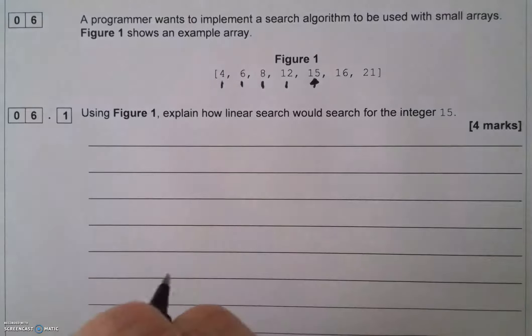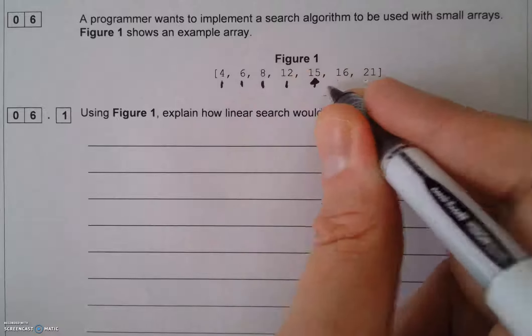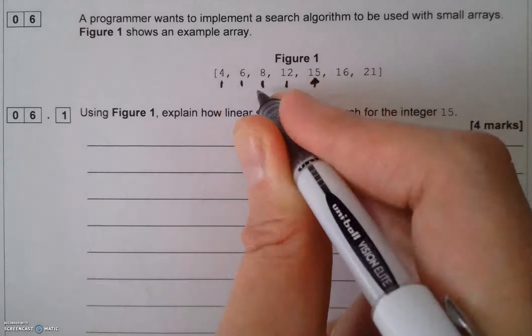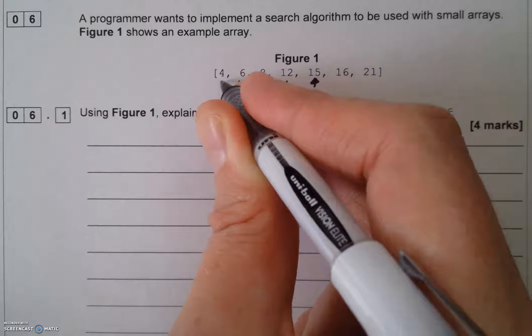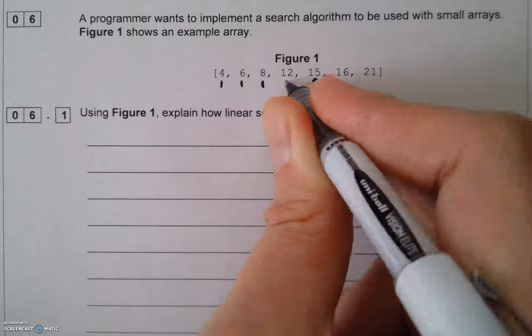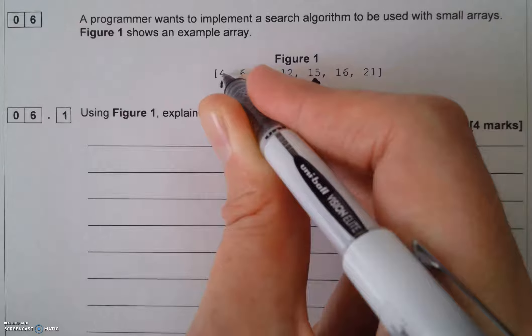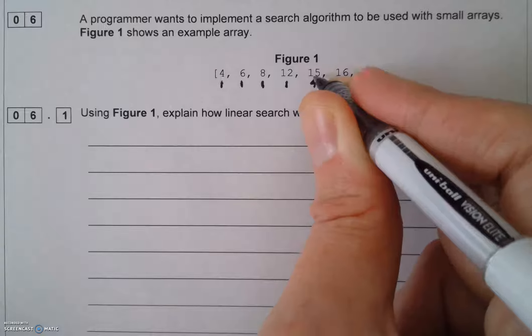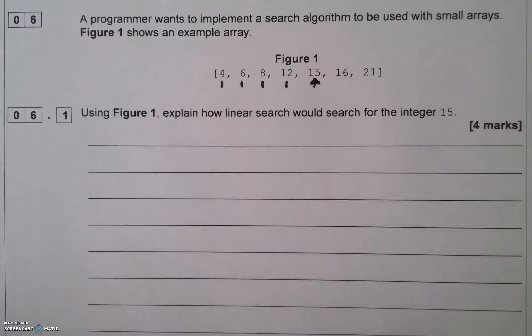Because it's a small list, the linear search is absolutely perfect for that, because all I'm going to do is look at each element in turn until I find the one that I'm looking for. After five goes, I found the integer 15 and then the search can stop.